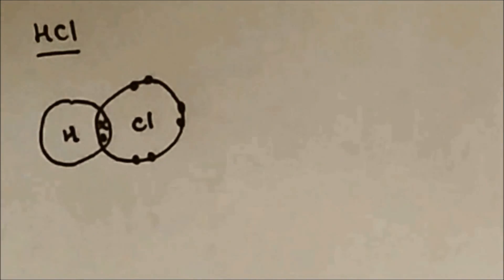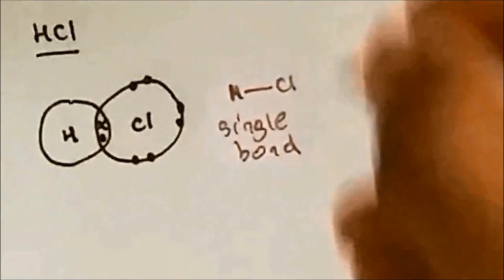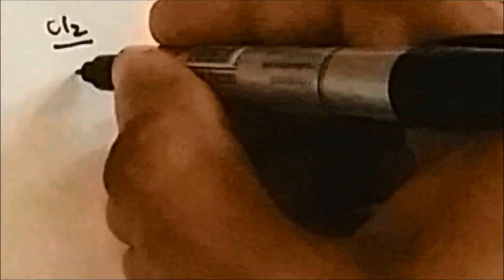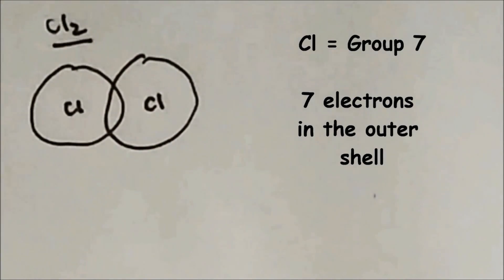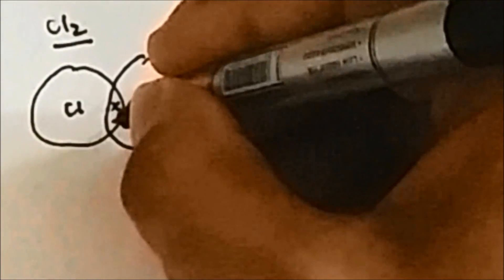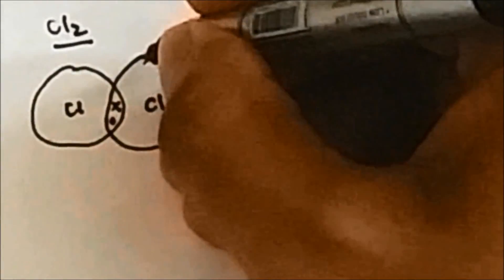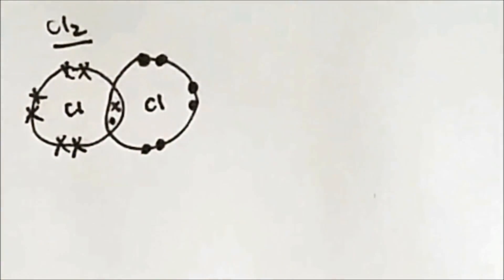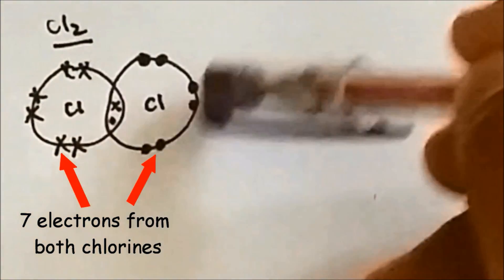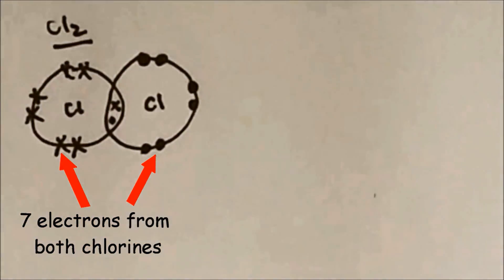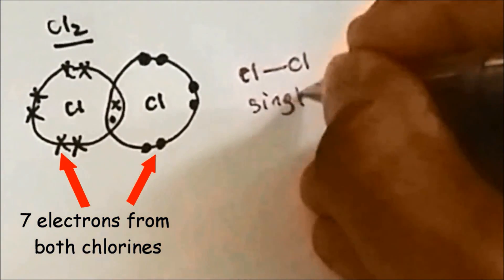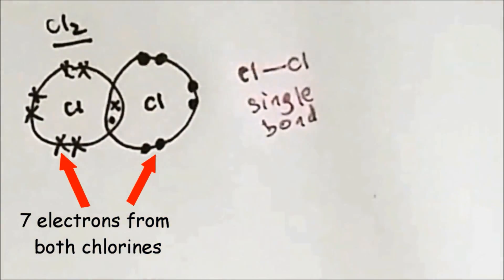The next molecule is chlorine, Cl₂. Two atoms of chlorine combine. Chlorine is in group 7 so it has seven electrons in the outer shell. One electron from each chlorine atom goes into the overlap, and the remaining six are found outside the overlap. Counting the electrons gives a full shell for each chlorine atom, and since there is one pair of electrons in the overlap, this is a single bond.